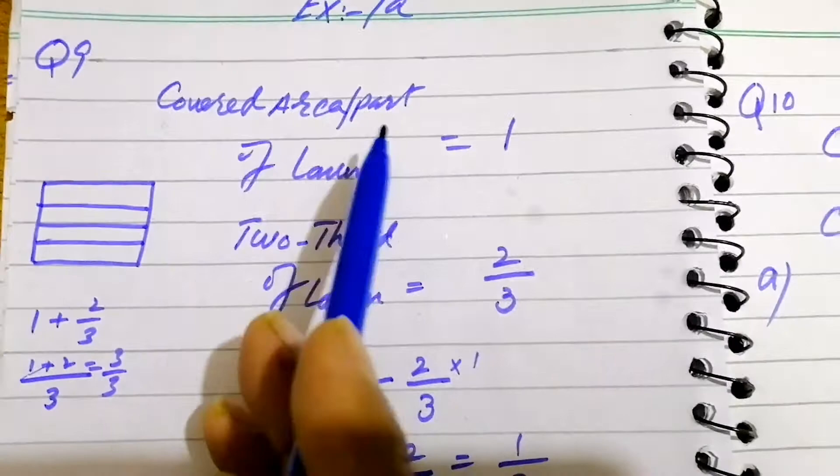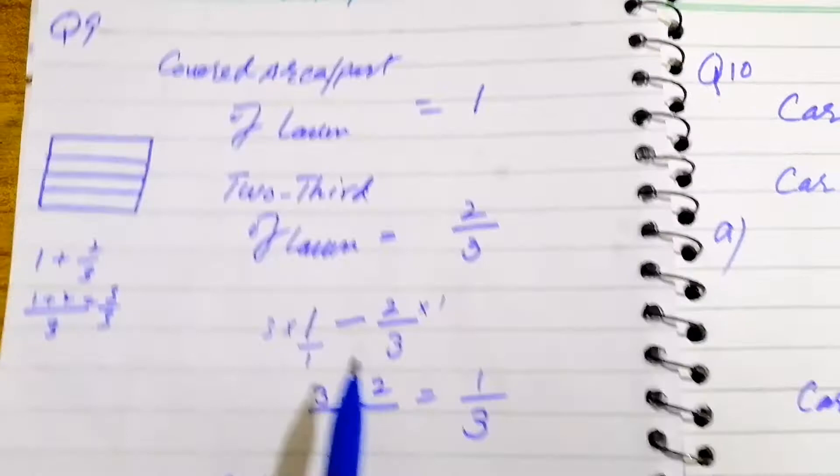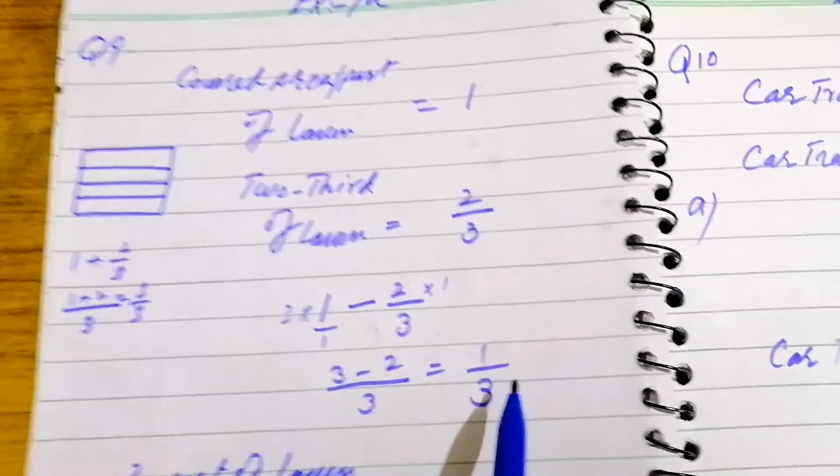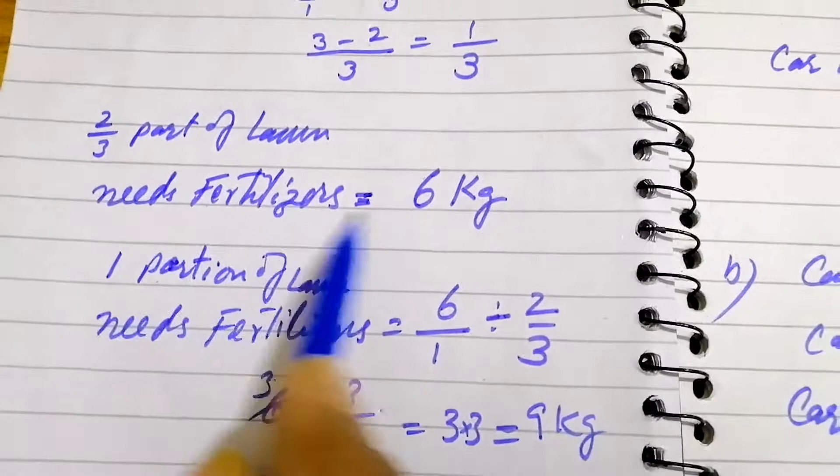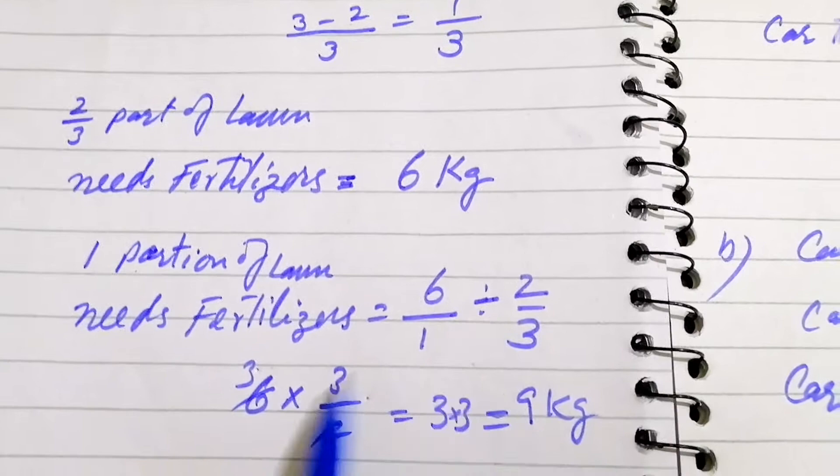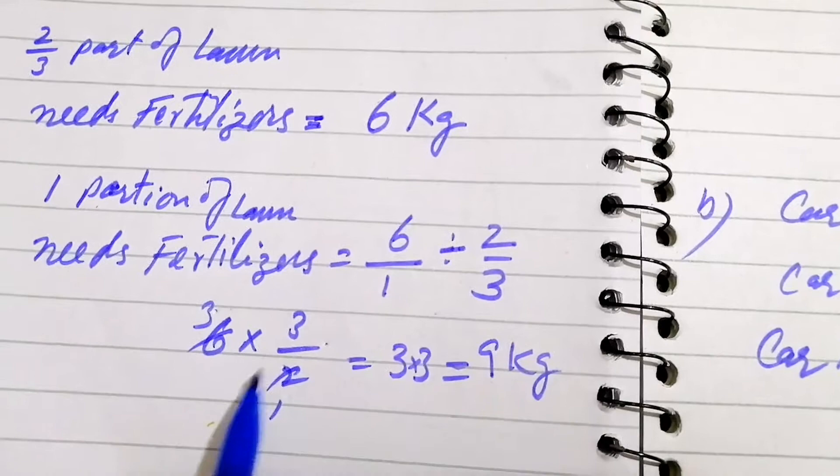Covered area of the lawn is 1 square kilometer, then two-thirds of the lawn is 2 over 3. 1 minus 2 over 3 is equal to, we take LCM 3, and 3 minus 2 is 1 over 3 part. 2 over 3 part of the lawn needs fertilizer 6 kg. If one portion of the lawn needs fertilizer, 6 over 1 divided by 2 over 3, we change this division into multiplication. It will be 3 over 2, then 6 multiplied by 3 over 2. 3 times 3 is 9 kg fertilizer will be needed.